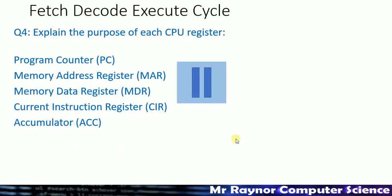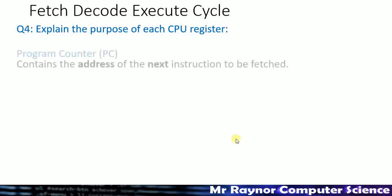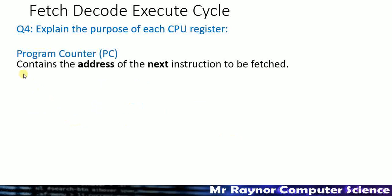Can you explain the purpose of each of those registers? The program counter contains the address of the next instruction to be fetched. Watch out — just because it's called program counter, don't assume it counts programs; that's a common mistake. We always need to keep track of where we're up to in a program — the program counter stores the address of the next instruction. It will never hold data or values, just addresses.